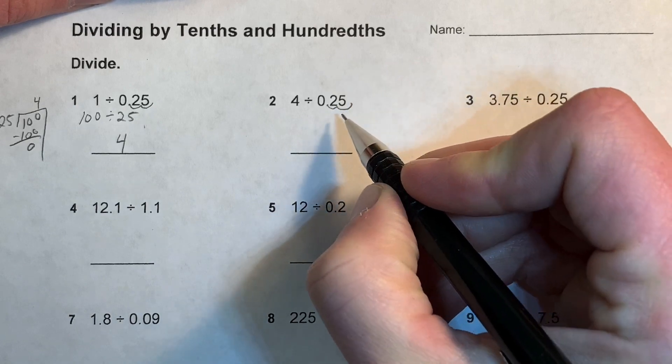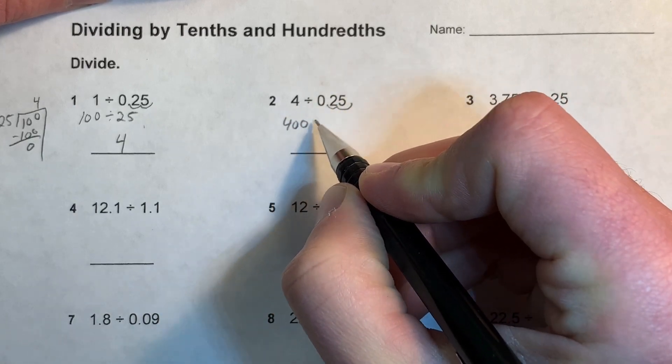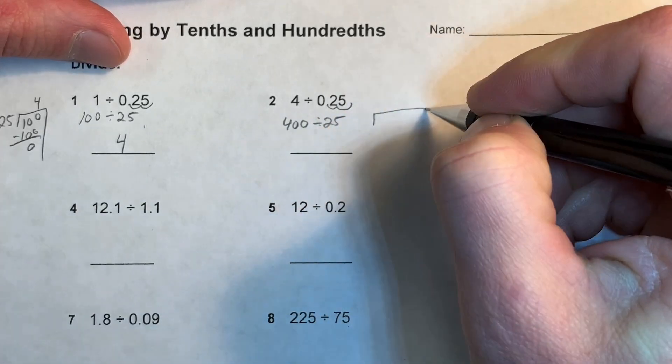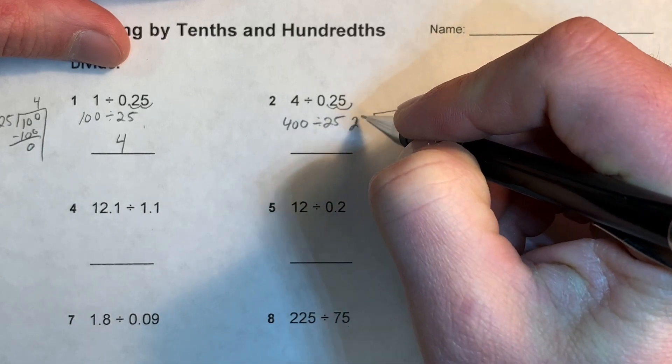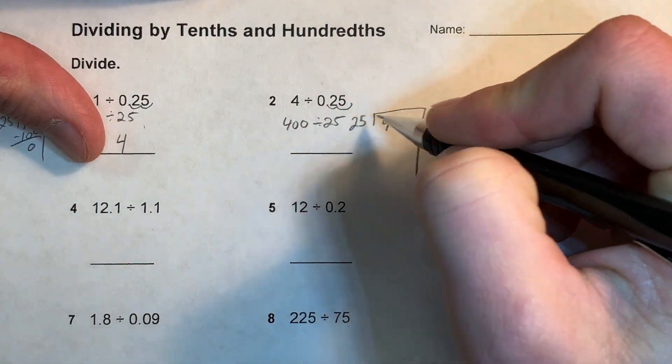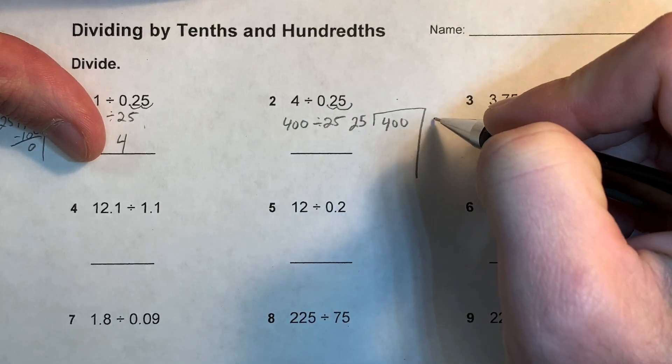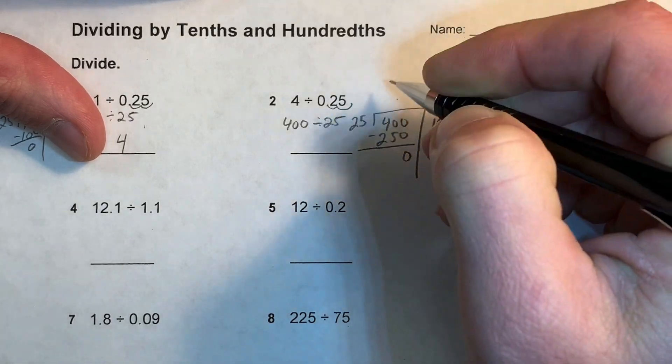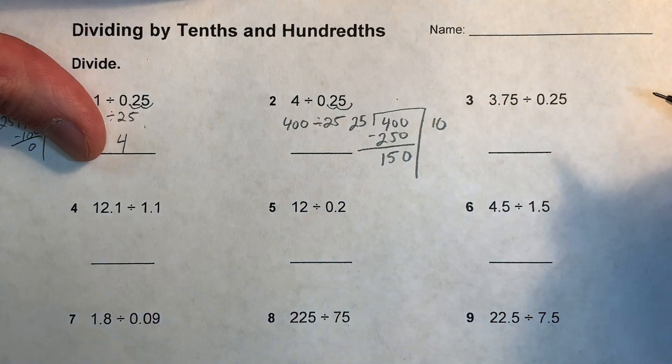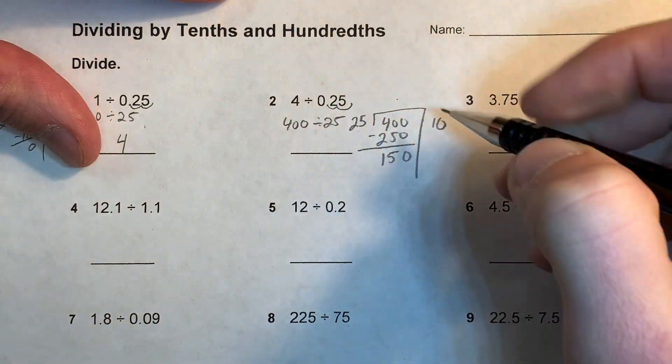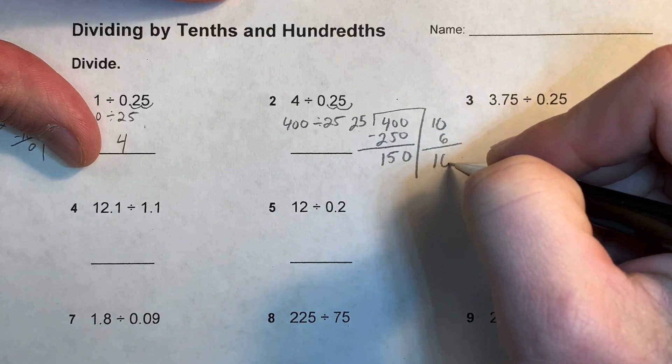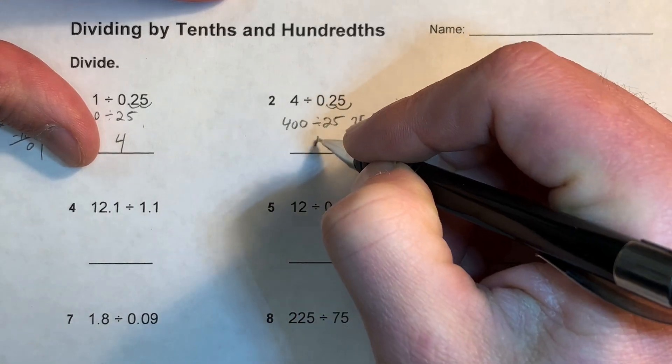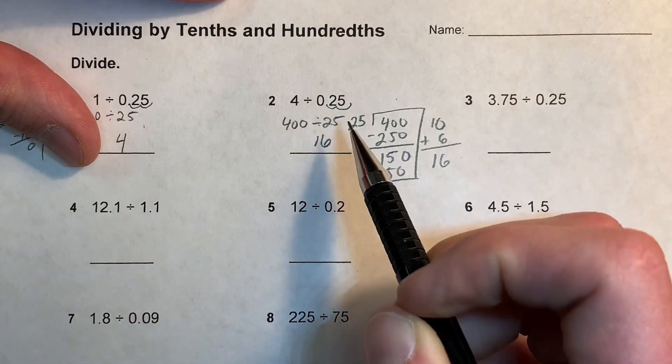This one I'm going to multiply by a hundred, multiply this one by a hundred, and then I can do partial quotient. 400 divided by 25. I know 25 goes into 40 one time, so I'm going to take out 10, I'm going to subtract. And then I know that six times 25 is 150.